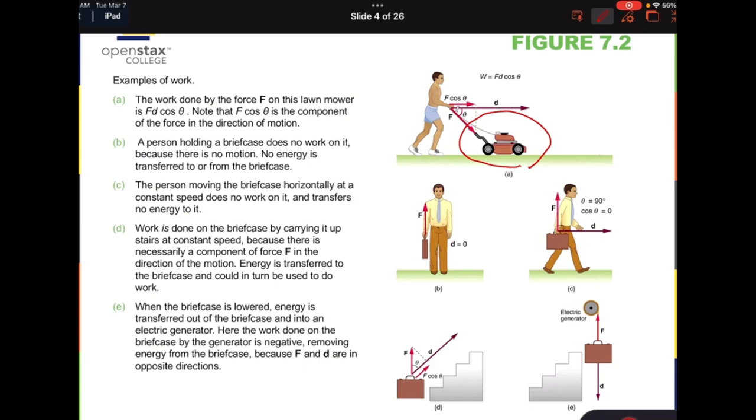Another example is this person holding a briefcase. And clearly, here, if we consider the briefcase as the object of interest, the force by this person on it is upward force, because it's holding the briefcase. But this person is not moving at all, briefcase is not moving as well. And that's why d is 0. If d is 0, you can easily figure out W has to be 0. So that's why there's no work done by this person on the briefcase if he's not moving at all.